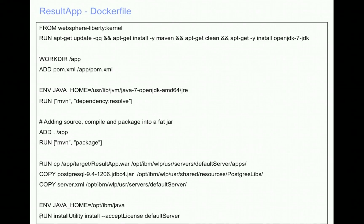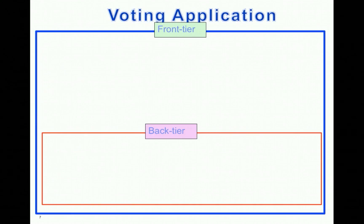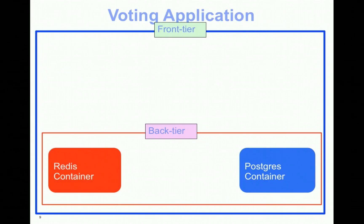The docker compose up command is used to start the configurations. When the command is invoked, first it creates the networking frameworks — front-tier and back-tier. Then it starts the Postgres container by pulling the Postgres image from Docker Hub, then pulls the Redis image from Docker Hub and starts the Redis container. These containers are started first because the other containers depend on them.